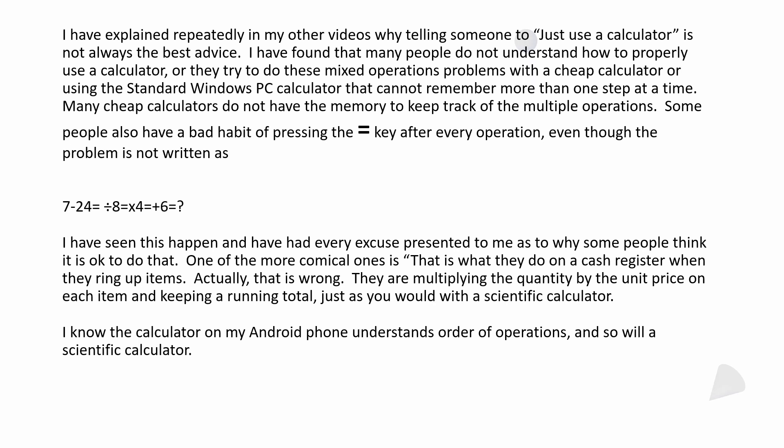There's one equal sign to the far right, so you shouldn't be hitting that every time. I've seen a lot of people actually do that, and I've had every excuse presented why some people do that. One of the more comical ones is that that's what they do on a cash register when they ring up items. But actually, that's wrong. What they're doing is they're multiplying the quantity by the unit price on each of the items and keeping a running total, just like you would with a scientific calculator. I know the calculator on my Android phone understands order of operations. It probably also does on an iPhone. I've never used one, so I'm going to assume that. Somebody can let me know in the comments.